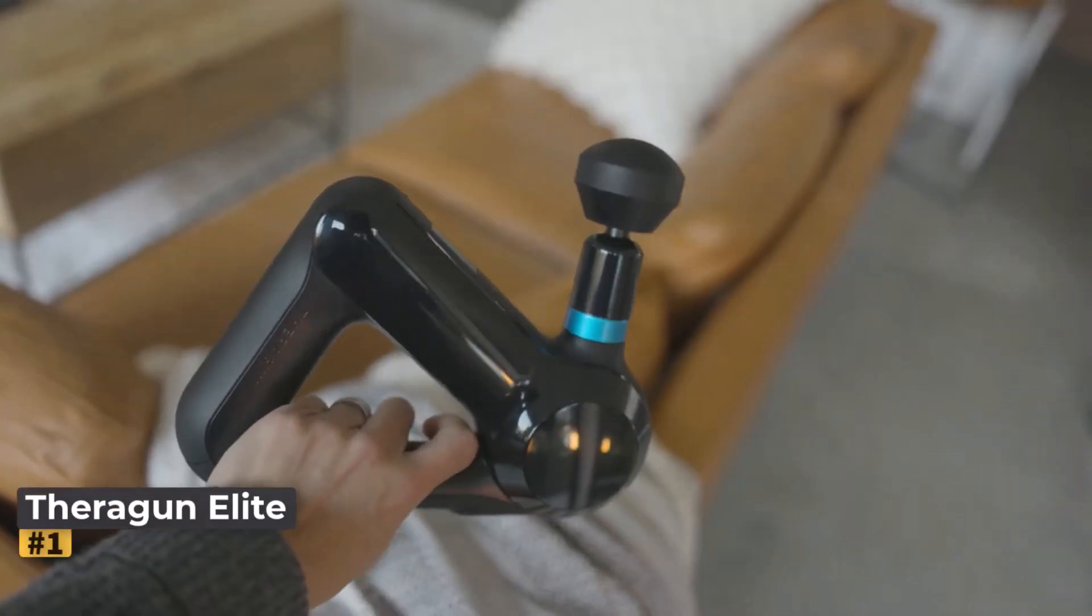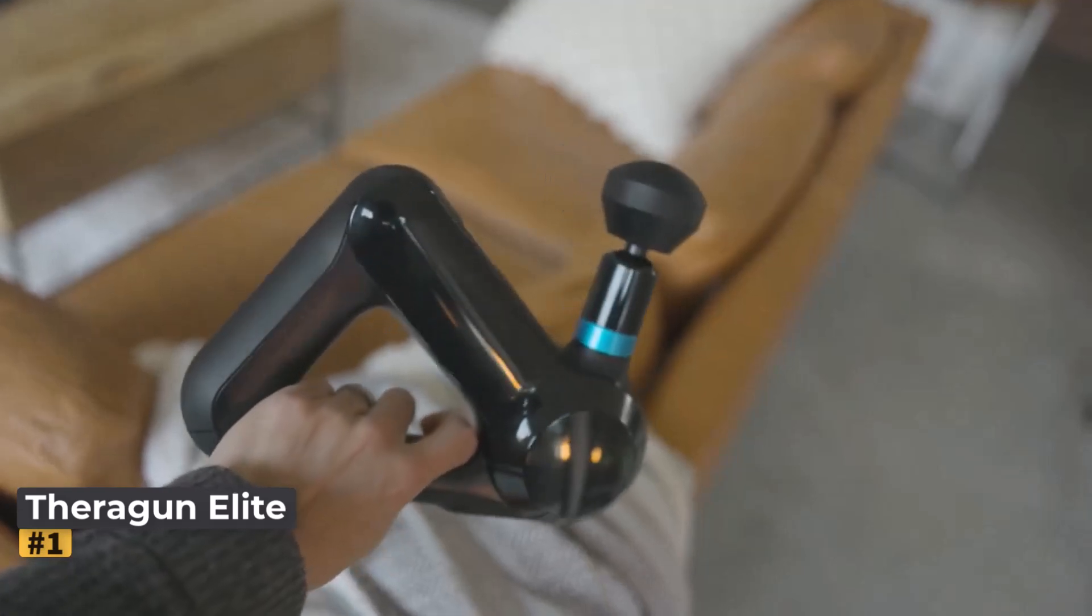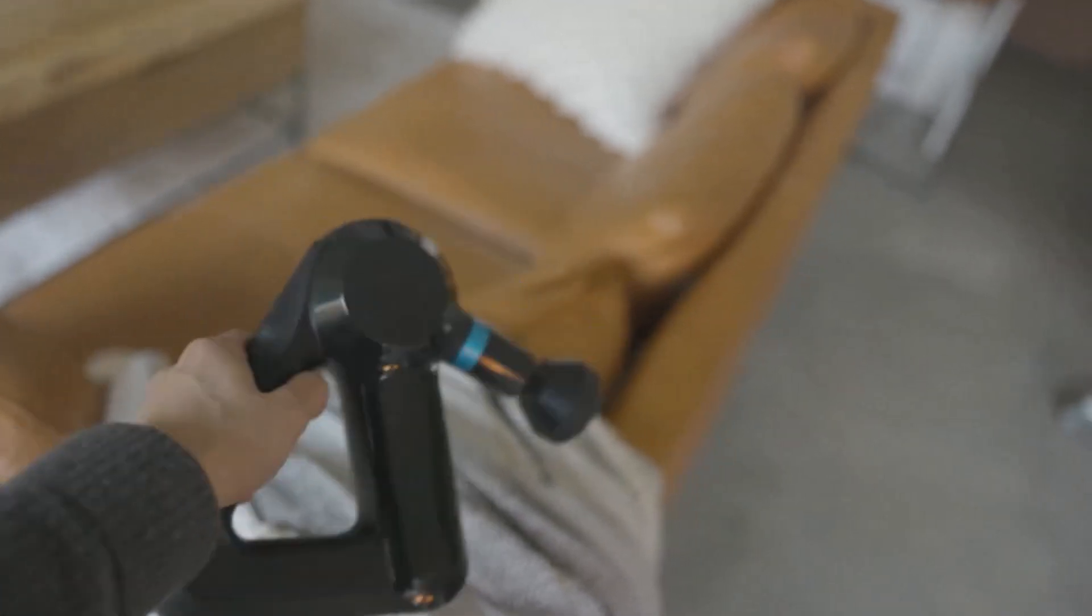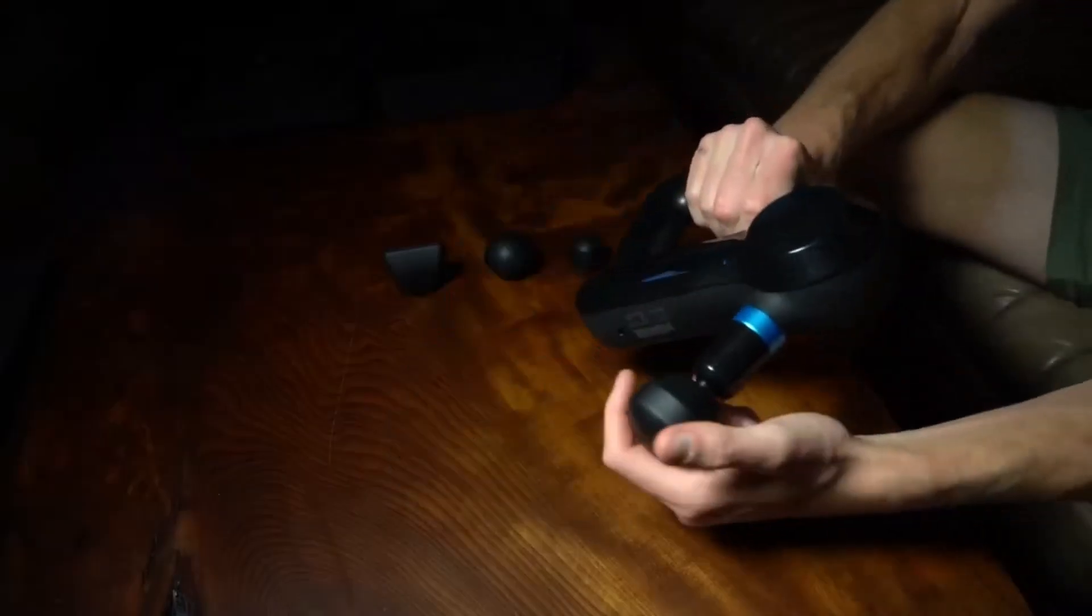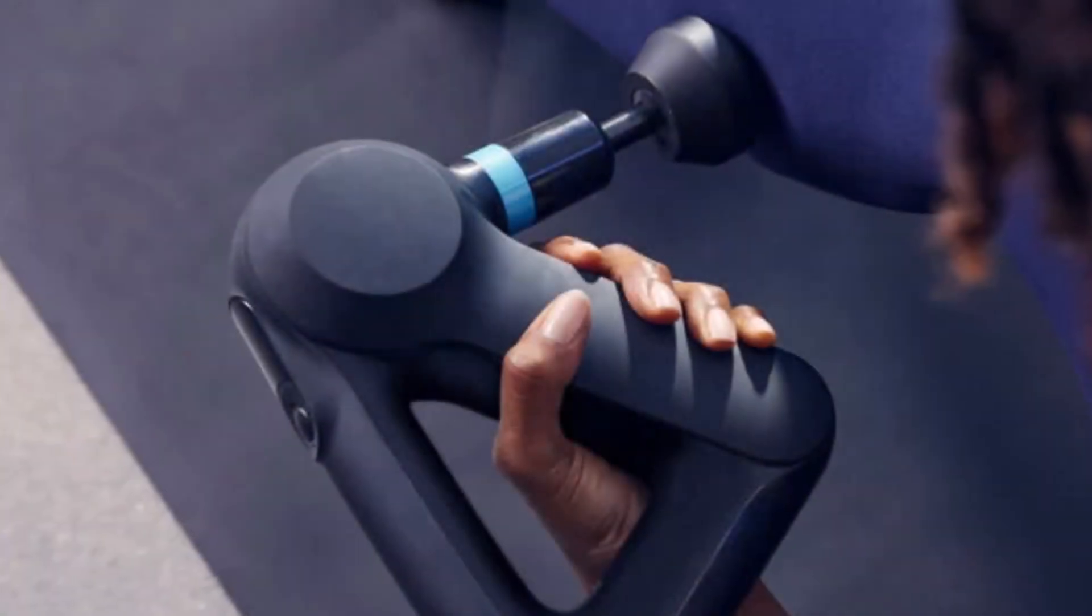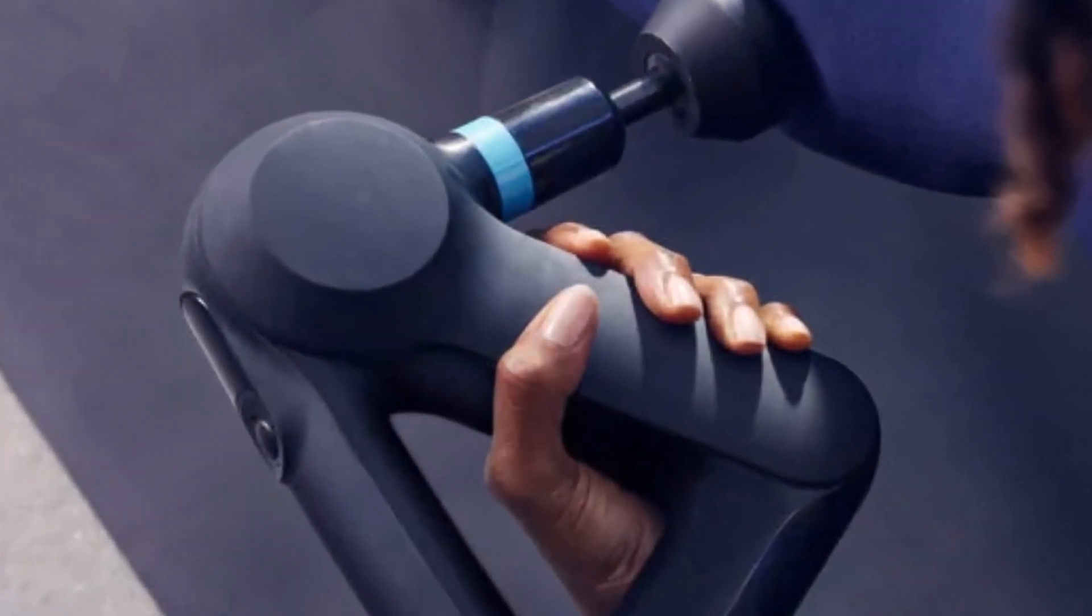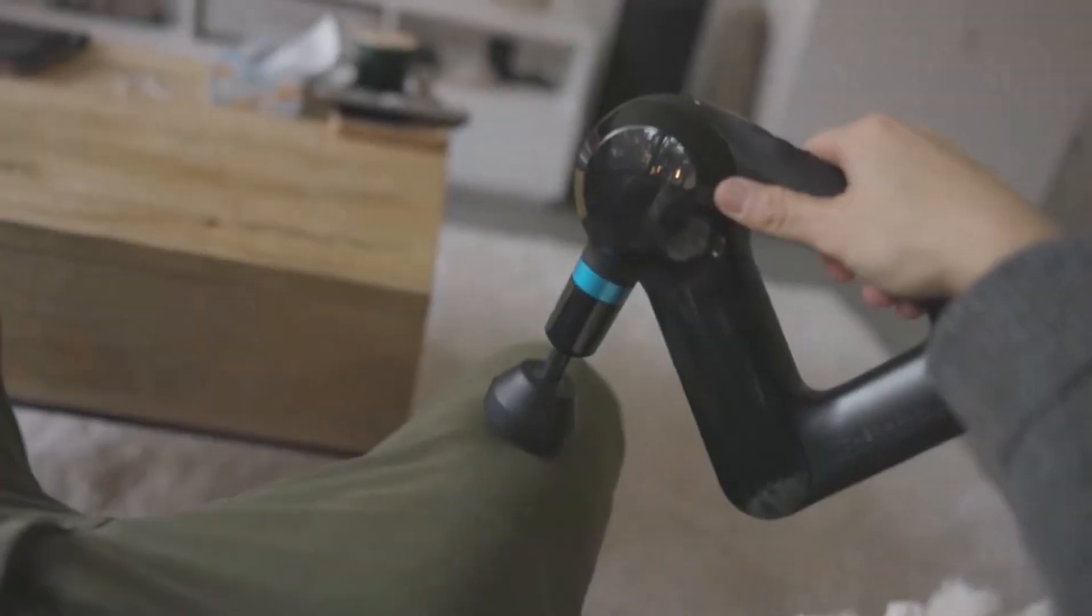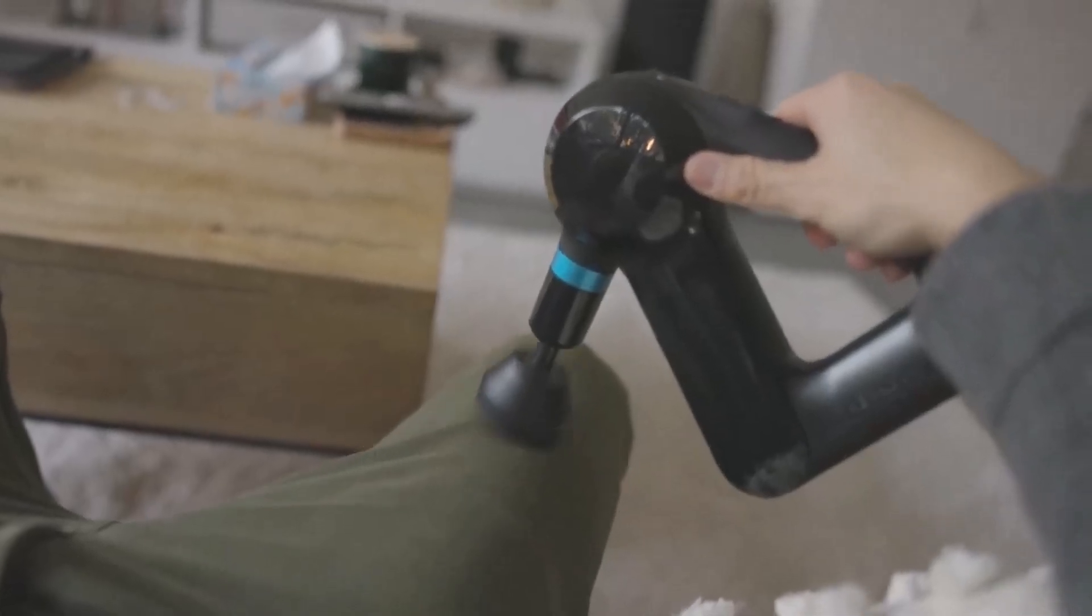Number 1. Theragun Elite. This is a robust and user-friendly massage gun, featuring a comfortable handle and delivering 40 pounds of pressure. It offers 5 speed settings, ranging from 1,750 to 2,400 percussions per minute and an amplitude of 16mm for deeper muscle penetration.